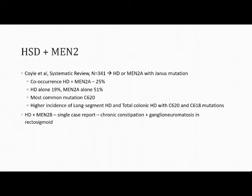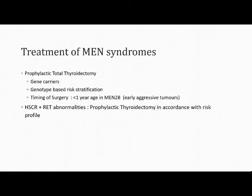A systematic review by Koile et al. studying 300 patients with either Hirschsprung disease or MEN 2a with a Janus mutation found co-occurrence in about 25% of cases, Hirschsprung alone in 20%, and MEN 2a alone in about 50%. The most common mutation noted was C620S. Higher incidence of long-segment and total colonic Hirschsprung disease is seen with these mutations. For MEN syndromes, the cornerstone of treatment is prophylactic total thyroidectomy in gene carriers following genetic evaluation and genotype-based risk stratification.